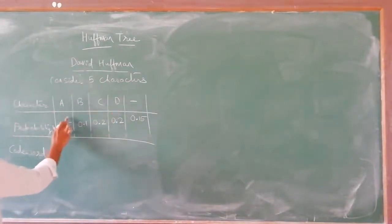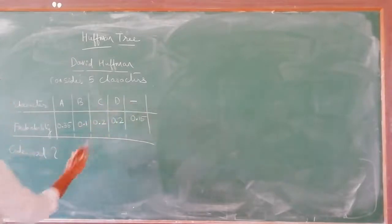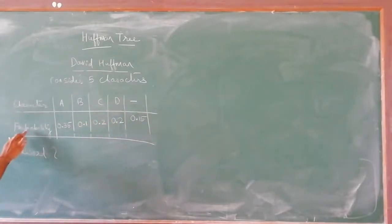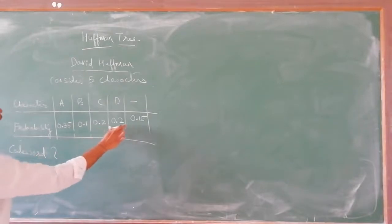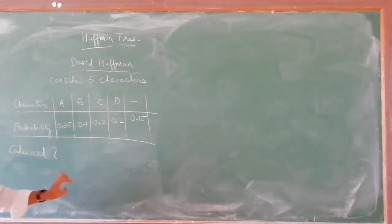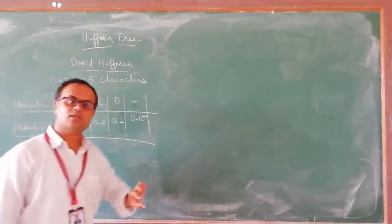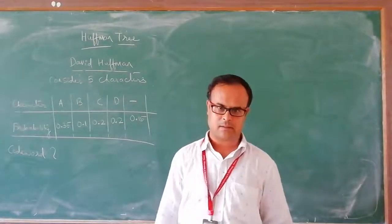Now let us take this example. Characters are given: A, B, C, D, and hyphen. The probabilities are also given: 0.35, 0.1, 0.2, 0.2, and 0.15. We need to find a code word for each and every character. These code words will be used for encoding the characters.